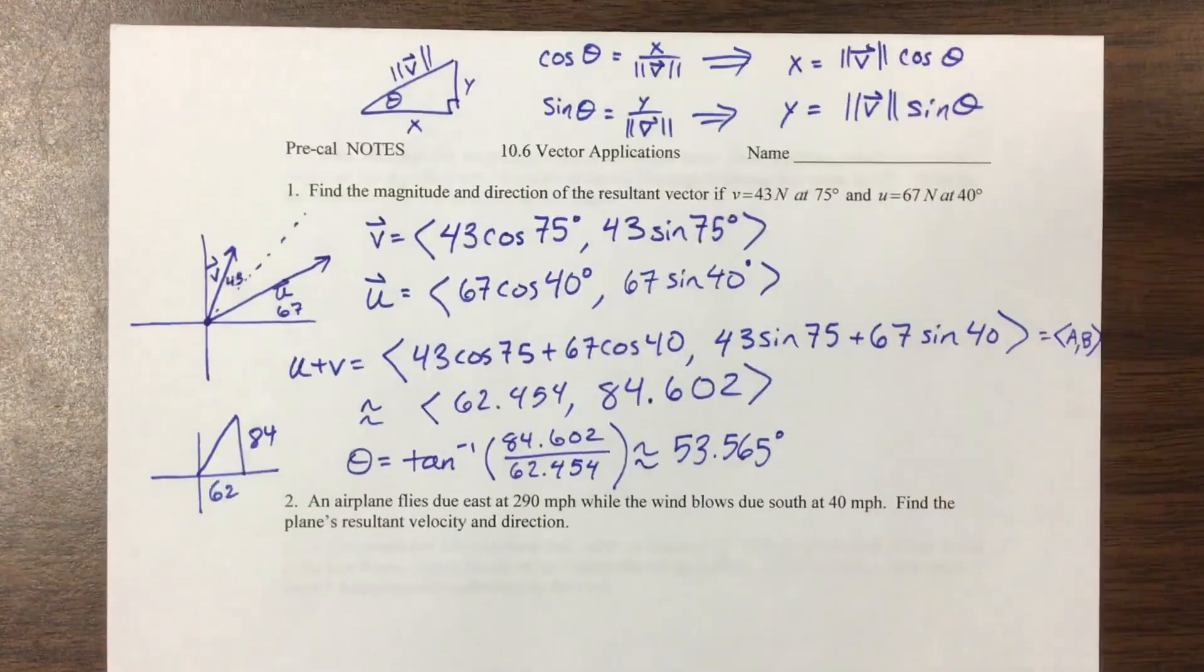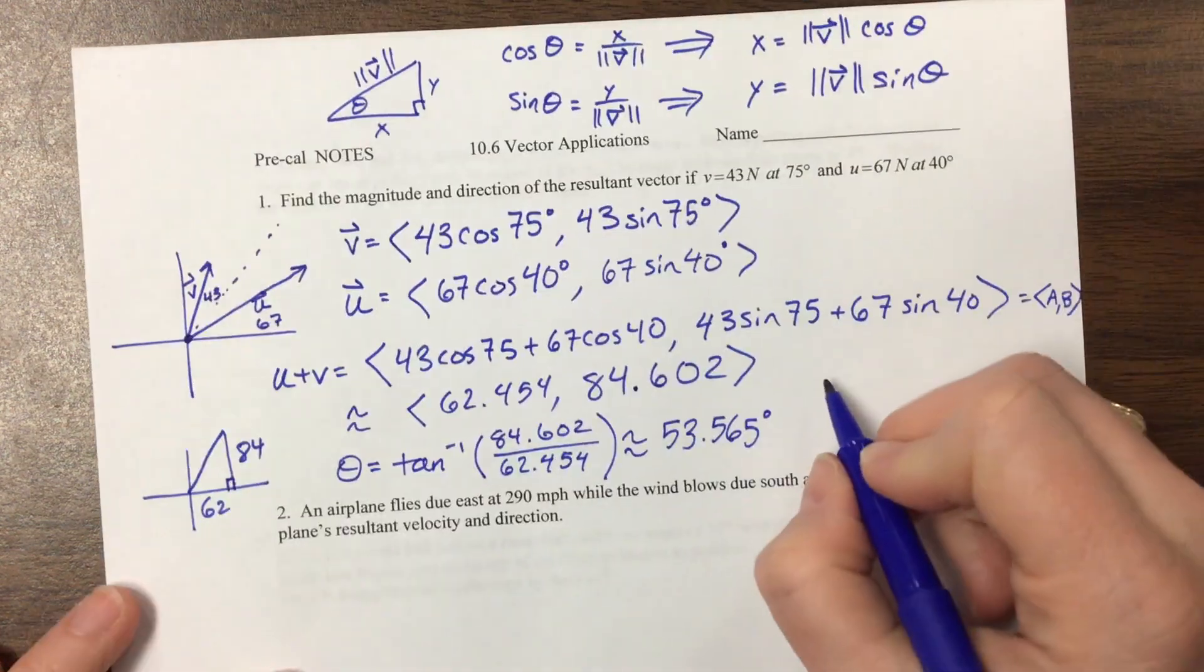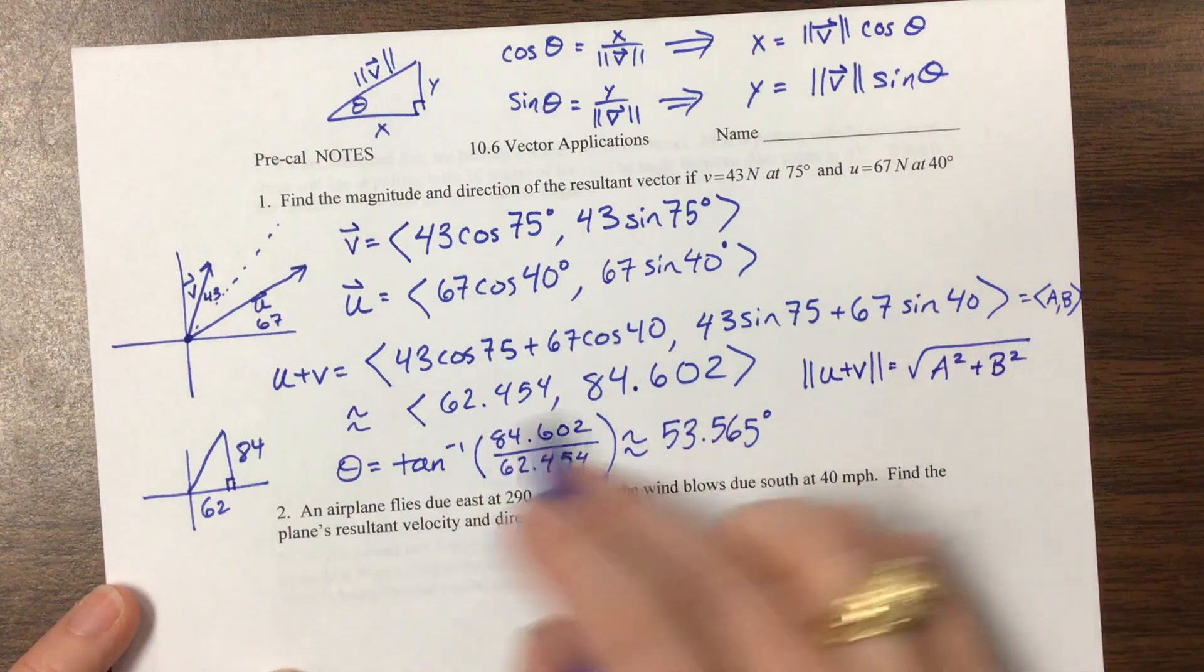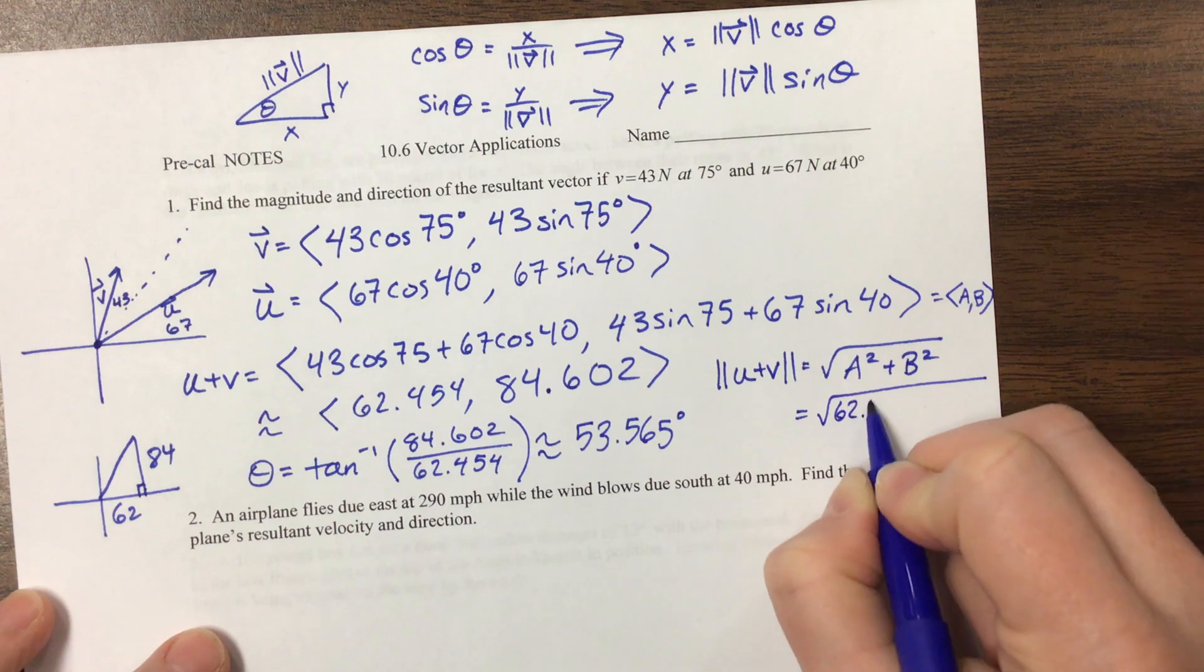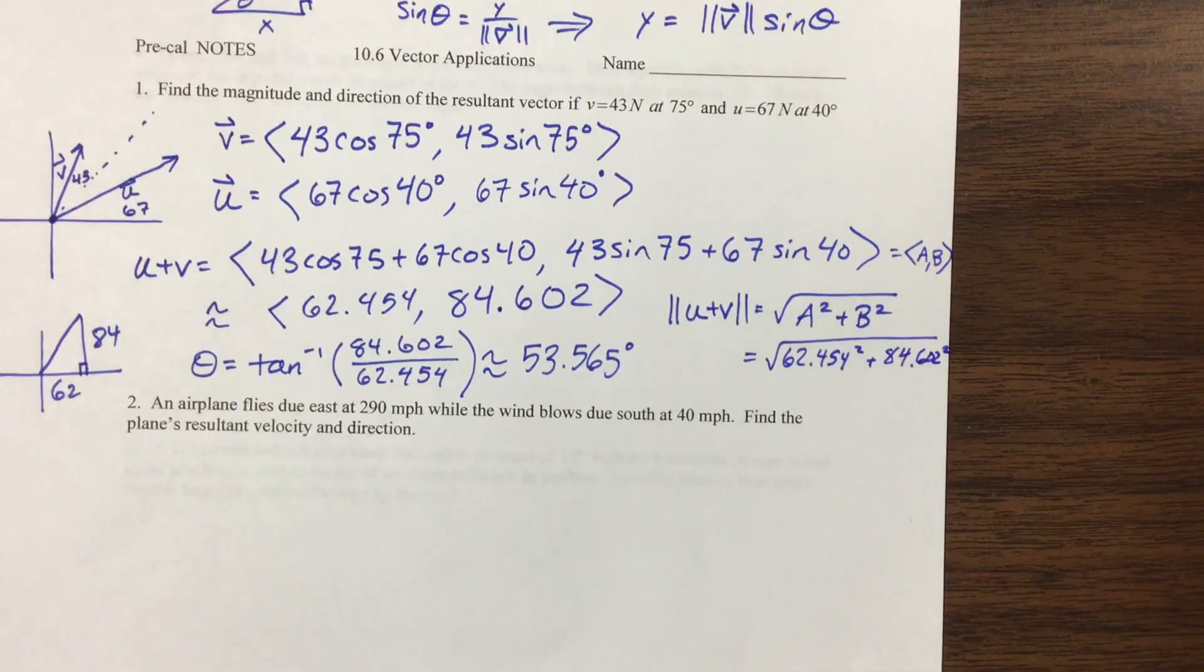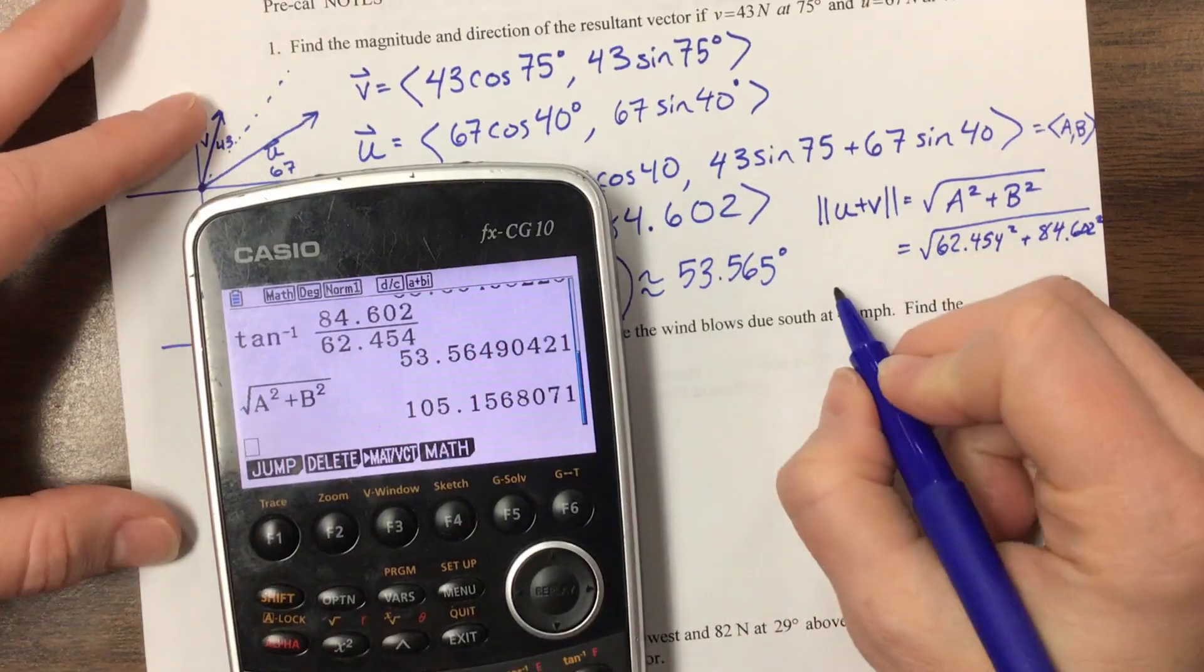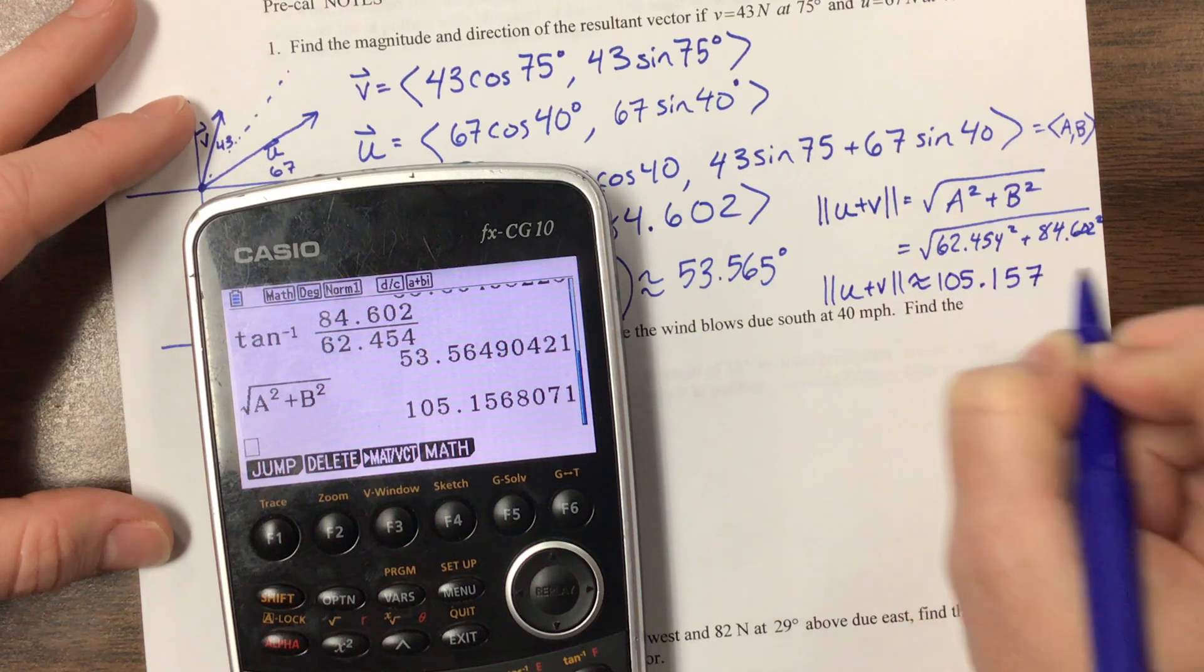Then the other thing that we need to do is we need to find the magnitude. Well, to find the magnitude, this is a nice little right triangle, so we're using Pythagorean theorem. So we know that the magnitude of our resultant, the magnitude of U plus V, is equal to the square root of A squared plus B squared that we got from before. So if you want to show all your work, you should show me that it's 62.454 squared plus 84.602 squared. The advantage to storing it in your calculator is that you don't have to hang on to all those. So it's the square root of A squared plus B squared. And we have a magnitude, the magnitude of U plus V is approximately 105.157 newtons.